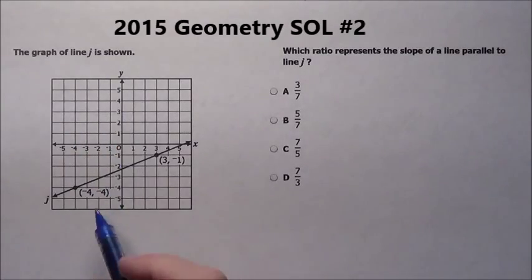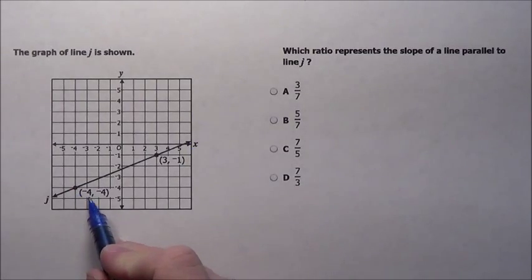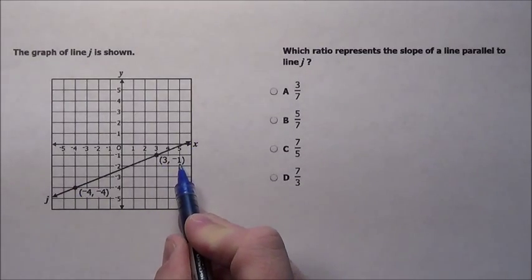Here's the problem. It says the graph of line j is shown. So here's this graph of line j. It gives us a point right here at negative 4, negative 4, and a point right here at 3, negative 1.